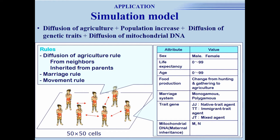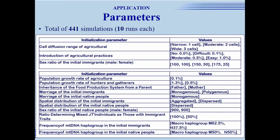The simulation model included three rules. In the agriculture diffusion rule, agriculture knowledge was obtained either from a neighbor or inherited from a parent. In the marriage rule, a male was married to a female randomly selected from neighboring females. In the movement rule, each agent moved in a random direction. You can see the parameters for our simulation model. For all combinations of parameters, the total number of simulations was 441, and each case was run 10 times.